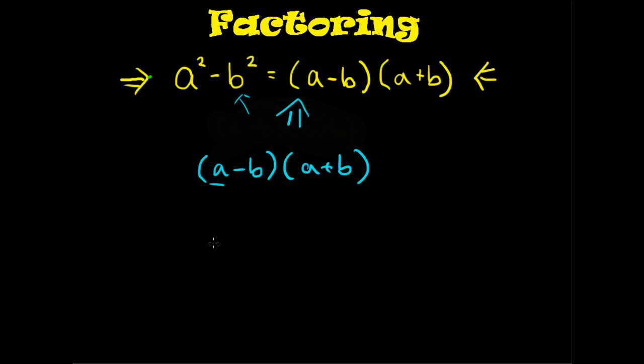First we're going to distribute a, so it's going to be a times a, which is a squared, and a times b, which is ab. And then we have this negative b we're going to distribute. Negative b times a is minus ba, and minus b times b is minus b squared.